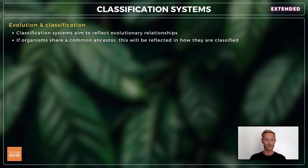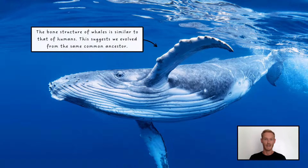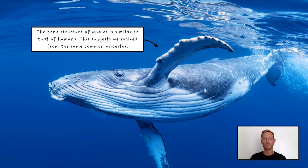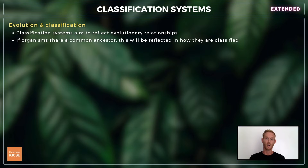The classification of organisms helps us to understand the evolutionary relationships that exist between them. For example, the arrangement and number of bones in the limbs of humans, lizards, bats, birds and whales is almost exactly the same in all five. According to evolutionary theory, these similarities in structure hint at a common ancestry, particularly as the animals use their limbs for such different things as running, flying and swimming. If they were completely unrelated, you might expect their bone structures to be more different. If it's discovered that organisms share a common ancestor, this will be reflected in how they are classified.